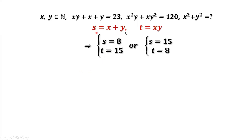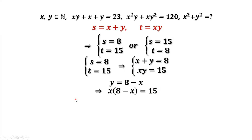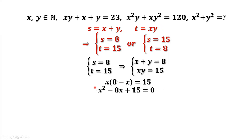By definition of s and t, we can replace s and t back to x and y variables. s equals 8 means x plus y equals 8; t equals 15 means x times y equals 15. We can rewrite y in terms of x from this result and then plug y into the second equation. We have this quadratic equation. Simplify to get this equation.